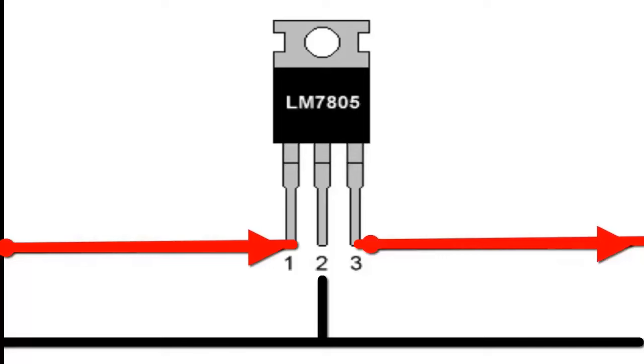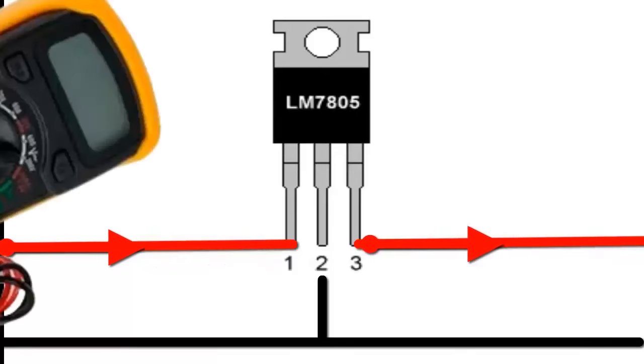Here are some steps to diagnose the 7805 regulator. Turn on the electronic board and connect a multimeter in continuous voltage measurement mode DC.